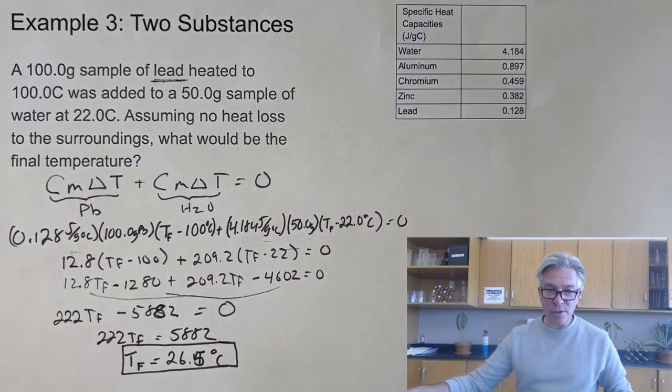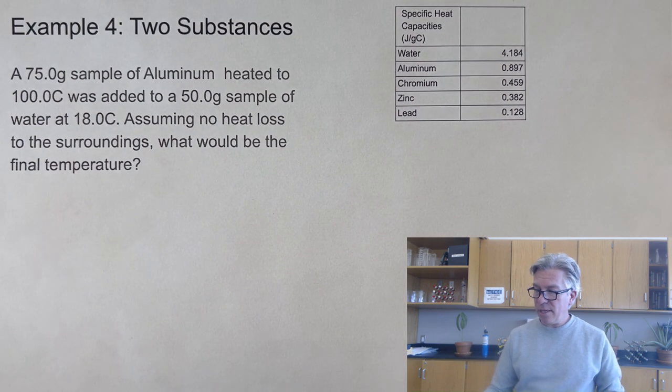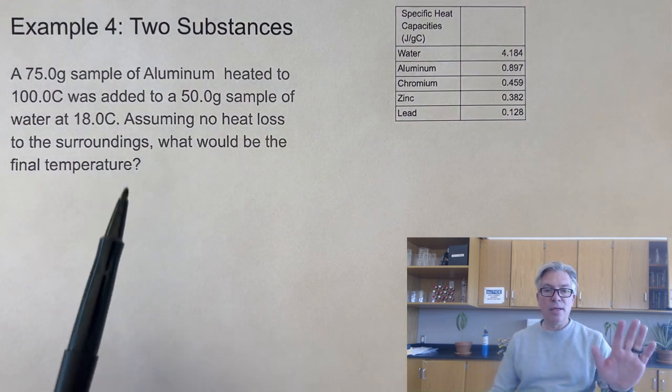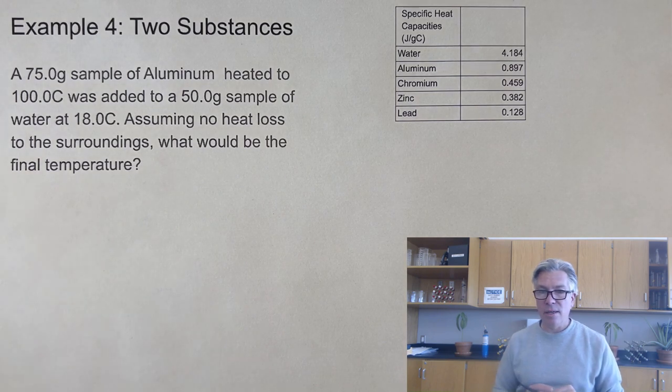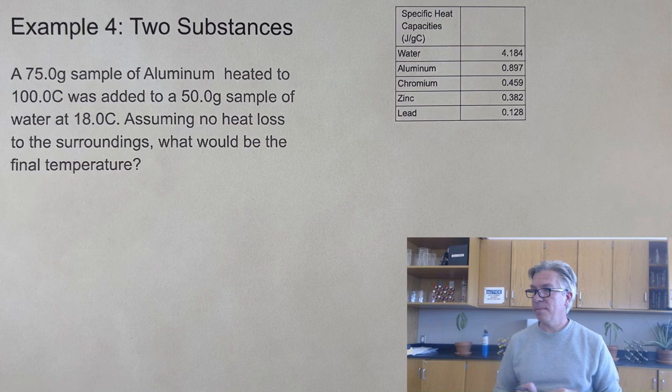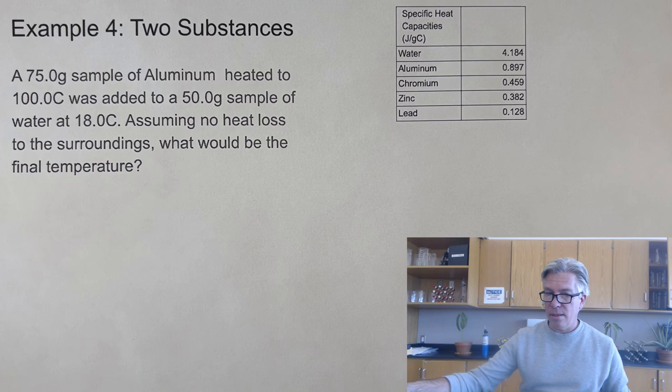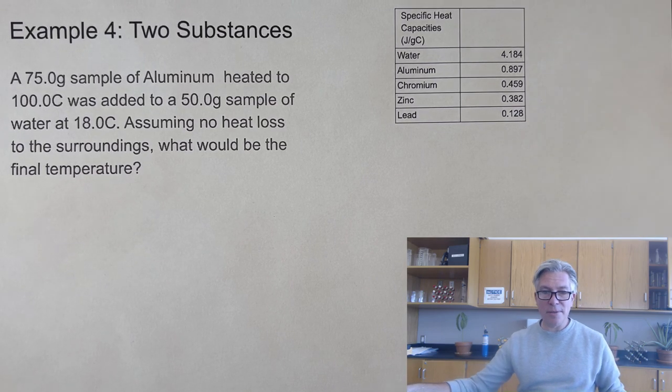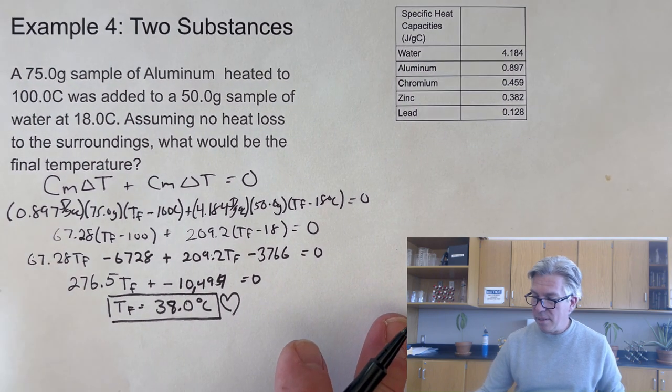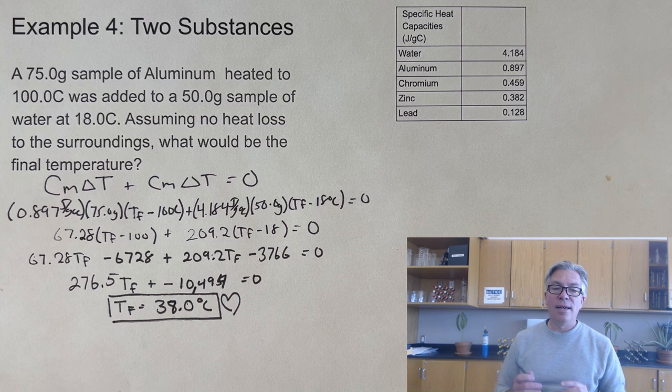But I prepared one for you to try. Take a look at example four: two substances, finding the final temperature. Take a moment and pause the video if you like. If you attempted this problem, congratulations on being an intrepid chemist working for mastery. If you got an answer of 38.0 degrees Celsius, congratulations. Great job.